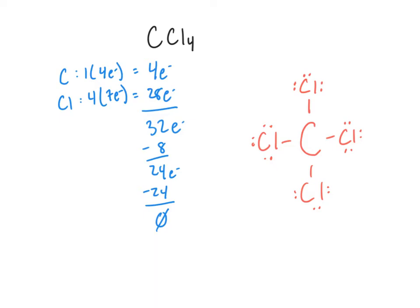Our second rule is to check that every atom has an octet. Starting with our central atom, carbon has 8 electrons around it — that's an octet. And every chlorine has 8 electrons around it as well. So every atom has an octet and we've used all of our electrons. This is a valid Lewis structure for CCl4.